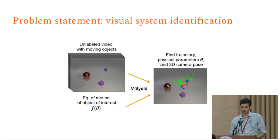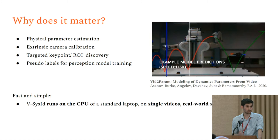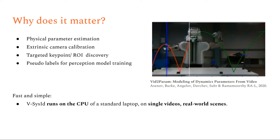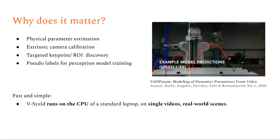This is useful for robotics tasks like intercepting a bouncing ball, which requires physical parameter estimation such as coefficient of restitution, knowing where the ball is to predict its future location, and knowing where the camera is relative to the robot to move the arm to the right place. Training a perception module for this usually requires a lot of supervised labeling, so it would be great to do this without having to specify those labels.